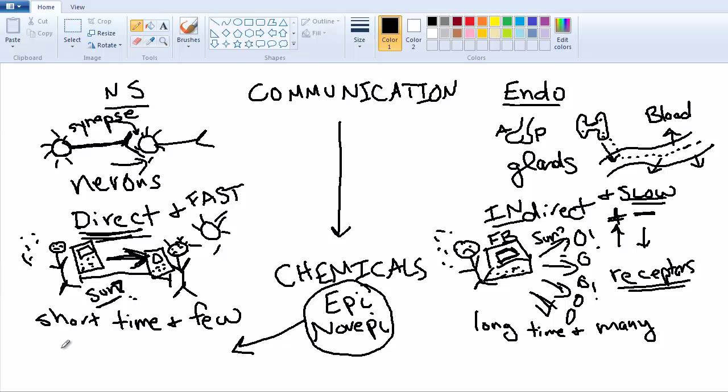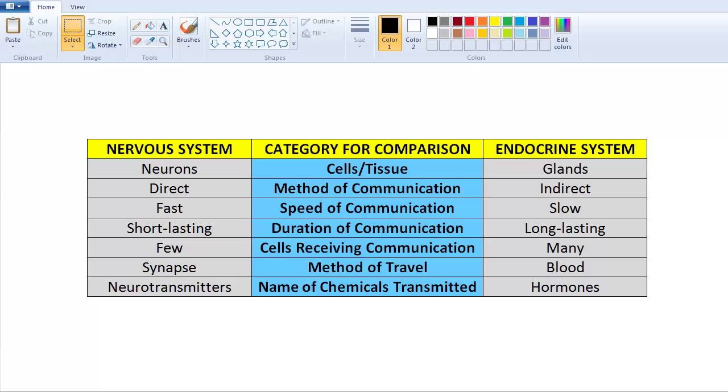However, when the chemicals are over in the nervous system, what do you call them? You call them neurotransmitters, right? Because they are in the nervous system and they are transmitting messages. When these same exact chemicals are over here in the endocrine system, you don't call them neurotransmitters anymore. You call them hormones. And there are different chemicals in different systems as well too, but this is just a nomenclature that is used. When the chemical is in the blood, it is called a hormone. When it's traveling through a synapse, it is called a neurotransmitter.